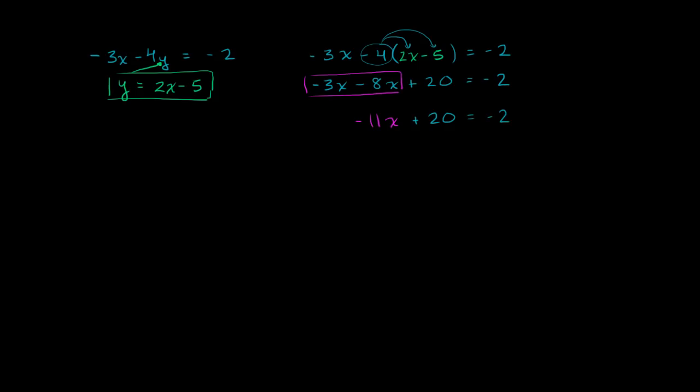Now to solve for x, we'll subtract 20 from both sides to get rid of the 20 on the left-hand side. On the left-hand side, we're just left with the negative 11x. And then on the right-hand side, we are left with negative 22.